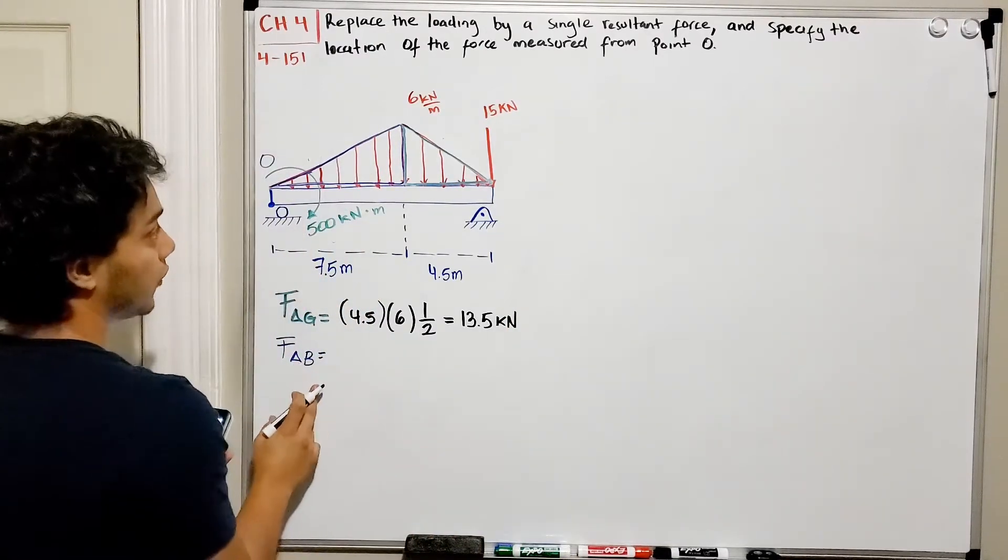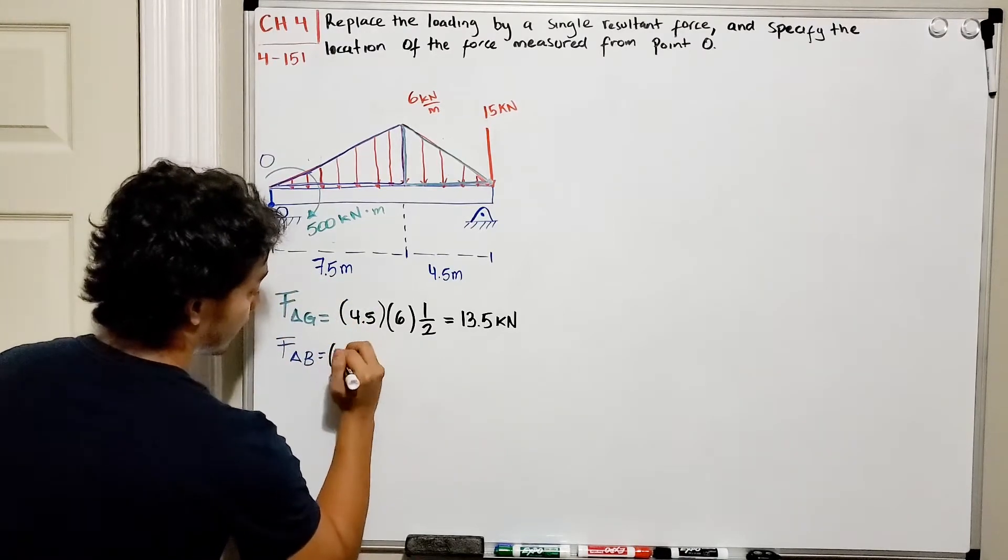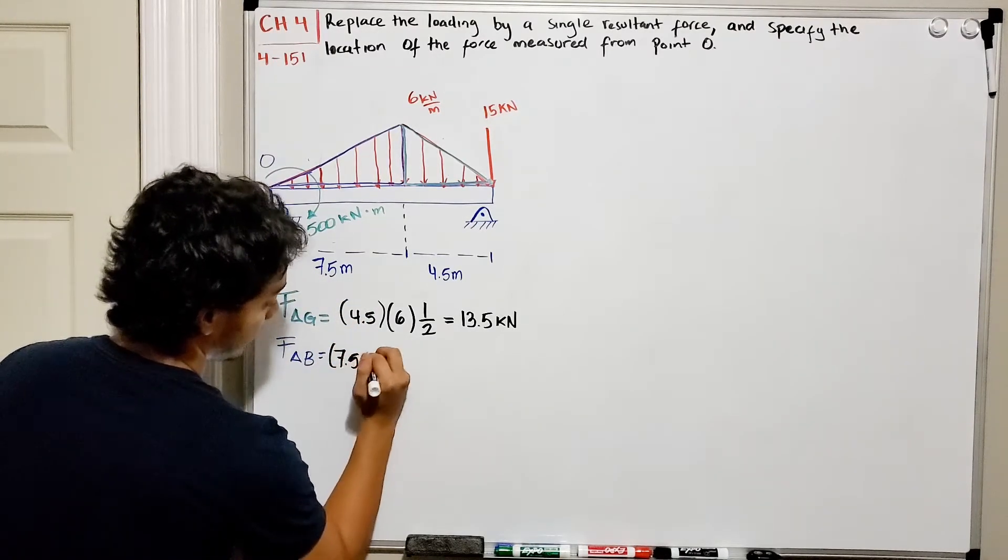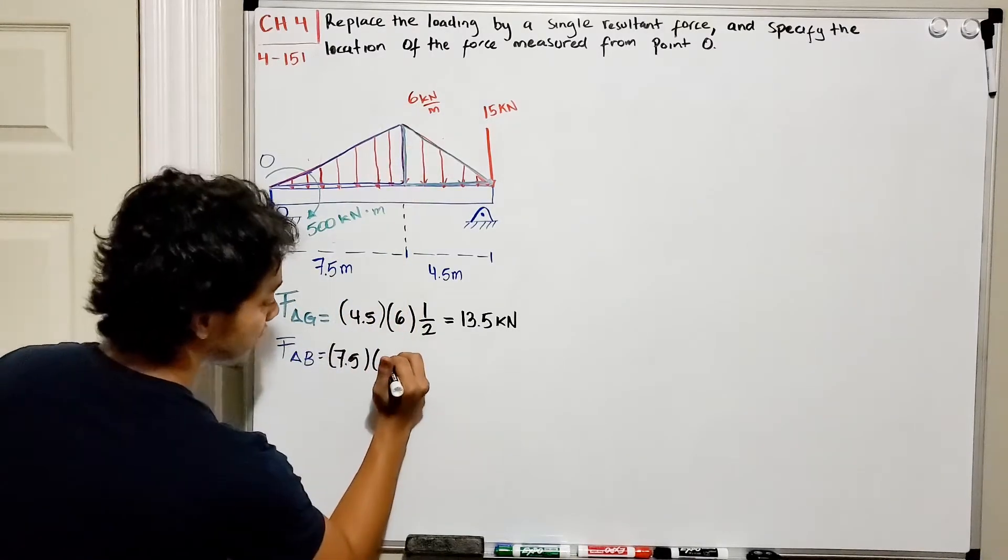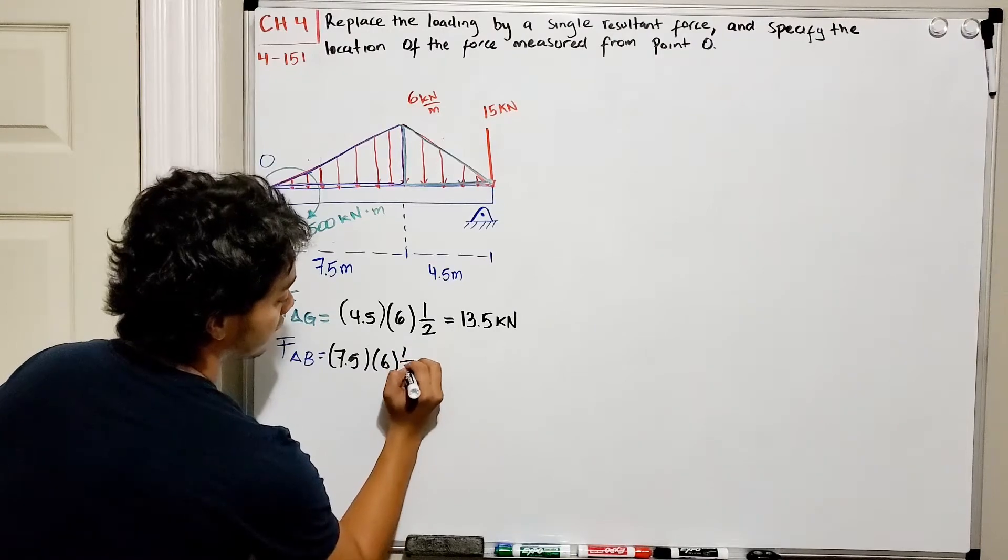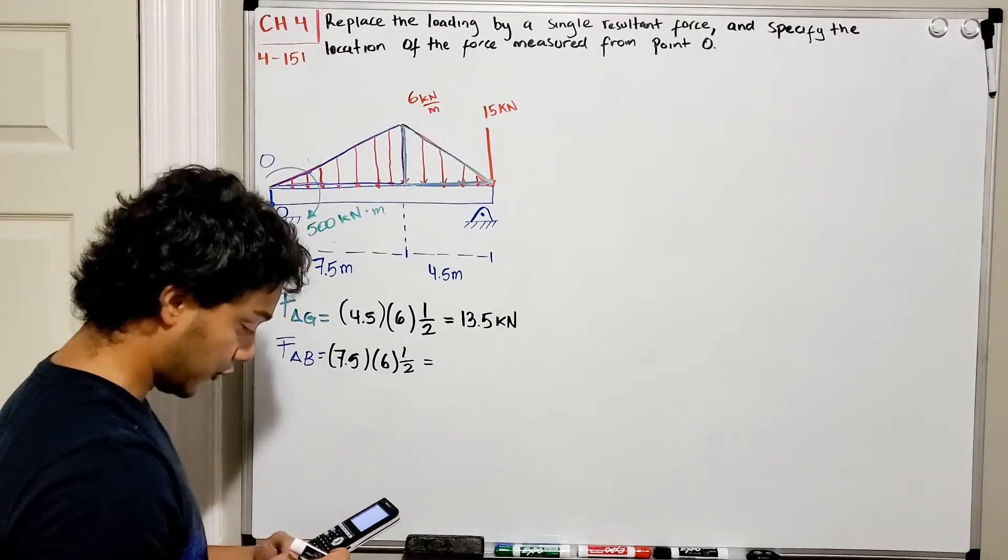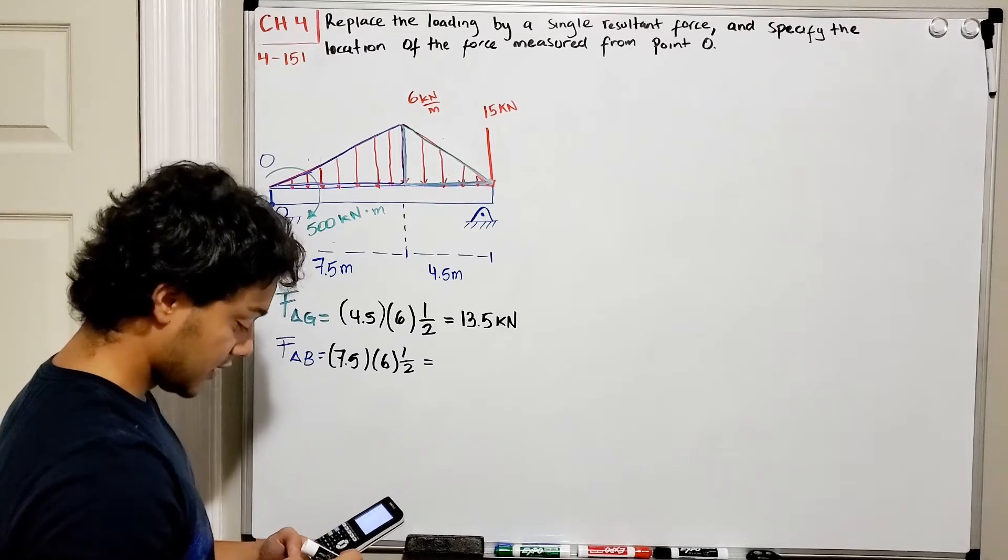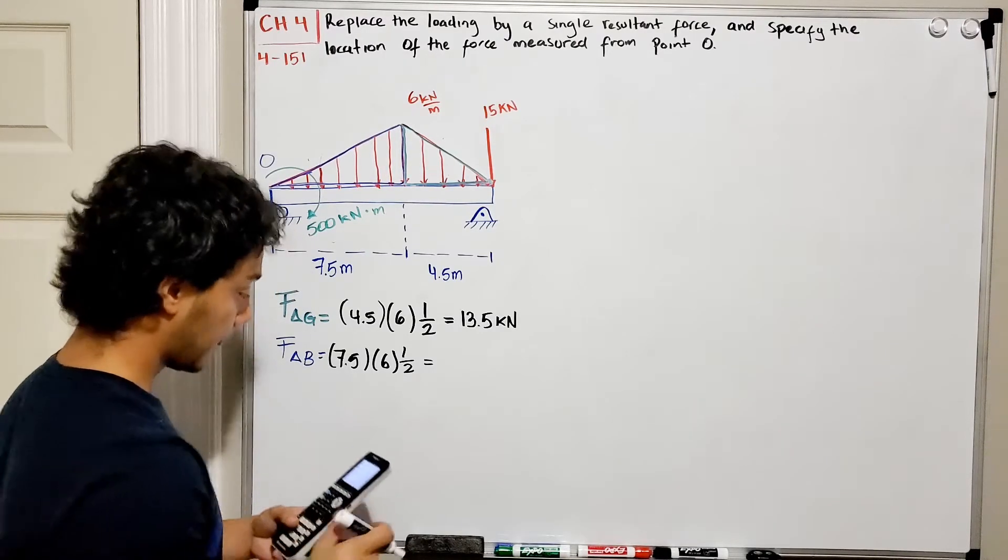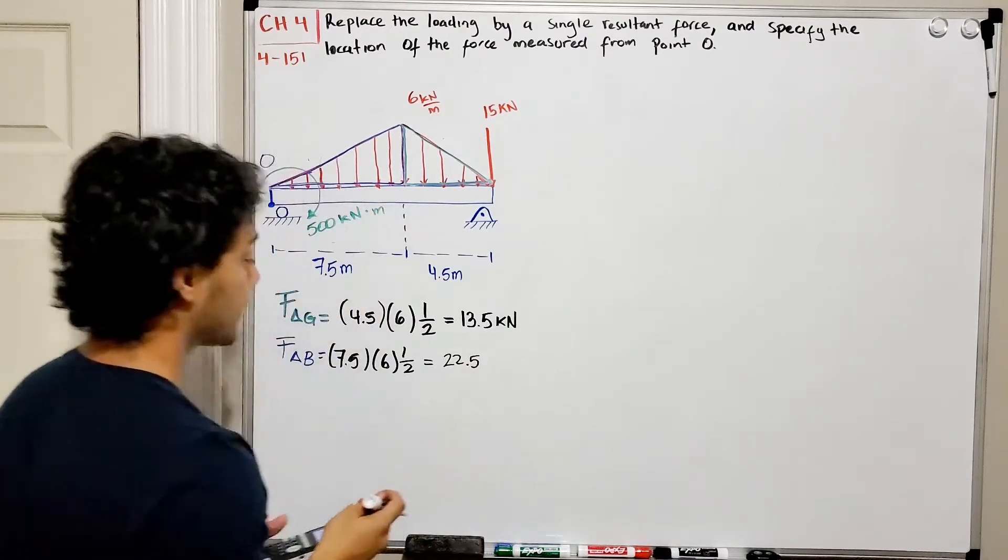Now what about the blue one? The blue one is really similar but different base. We have 7.5 for my base, multiplied by the height which is the same 6 kN/m, and divided by two. So 7.5 multiplied by 6 divided by 2, and that gets me 22.5.